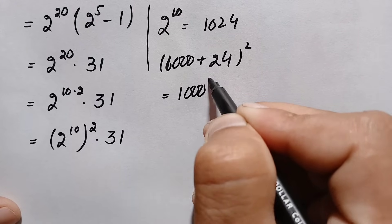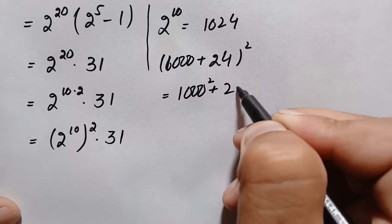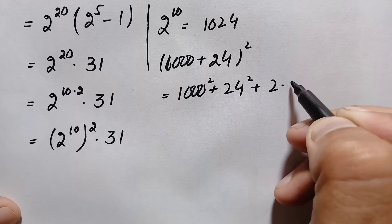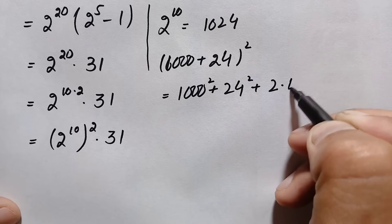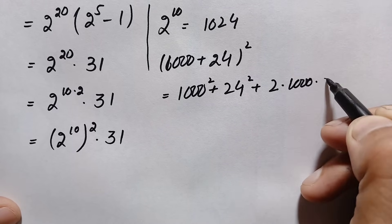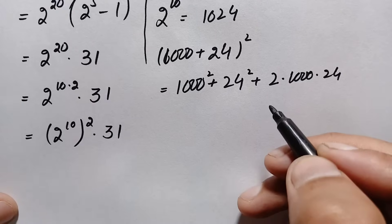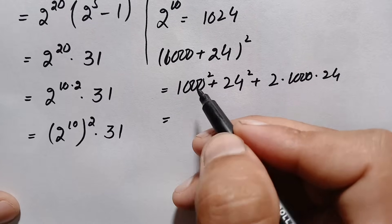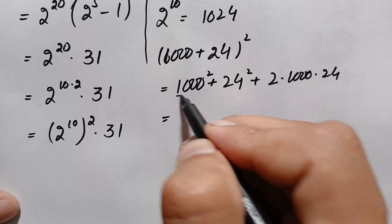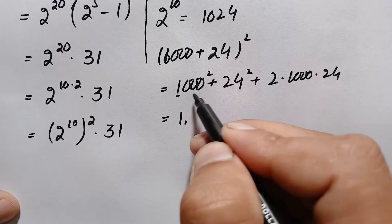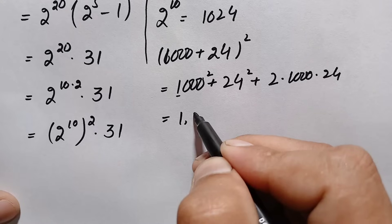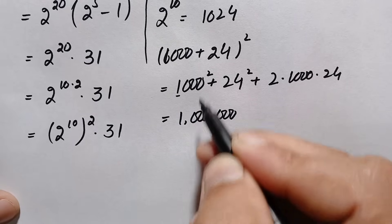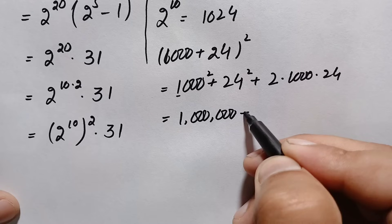Expanding (1000 + 24)^2: the first term is 1000 squared. Since 1 squared is 1 and there are three zeros which double to six zeros, 1000 squared equals 1,000,000 (one million).